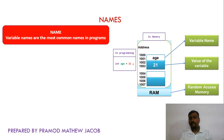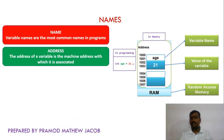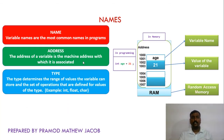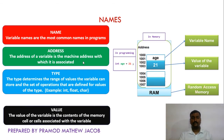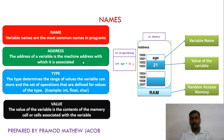Variable names are the most common names used in programs. The address of a variable is the machine address with which it is associated — here, the variable name age is associated with addresses up to 2003, since an integer consumes four bytes where each address represents one byte. The type determines the range of values the variable can store and the set of operations defined for values of that type. Types include int, float, char, string, etc. An integer consumes two or four bytes; in modern systems, four bytes. A float consumes four bytes; a character consumes one byte. The value is the contents of the memory cells associated with the variable — here, 21 is the value mapped to the name age.